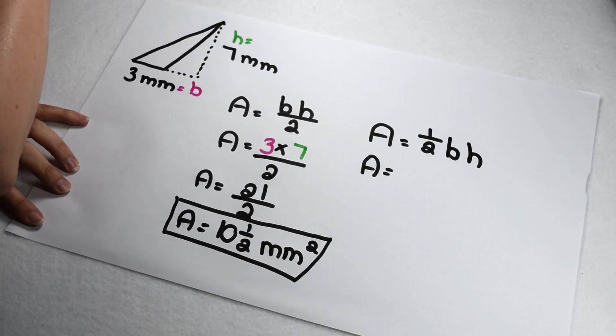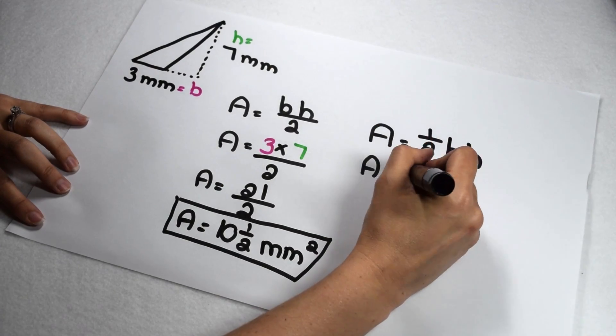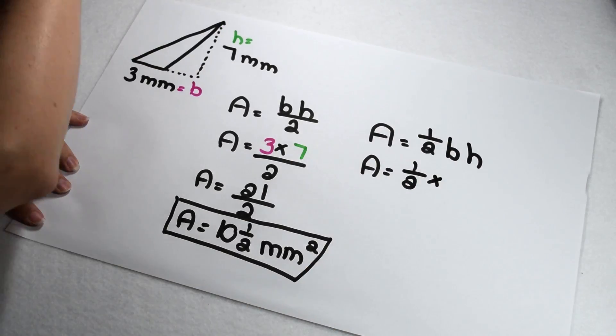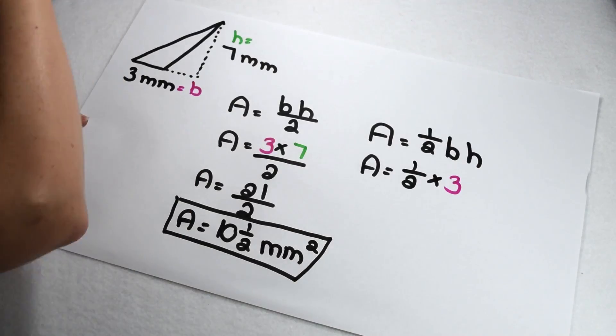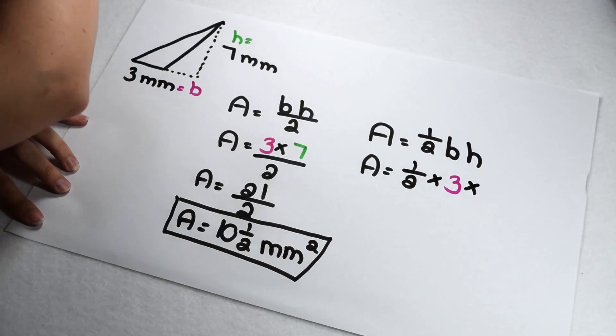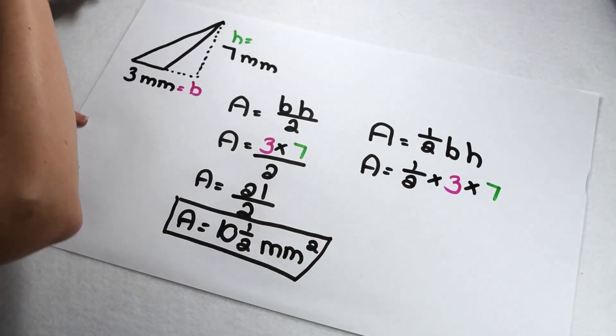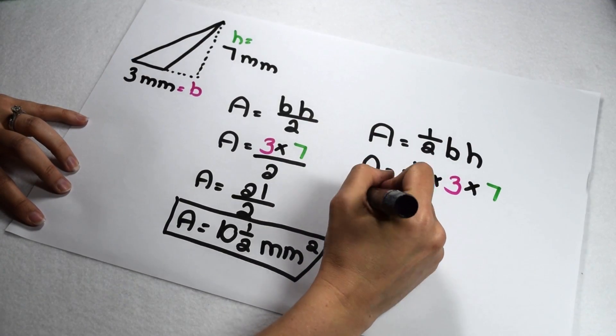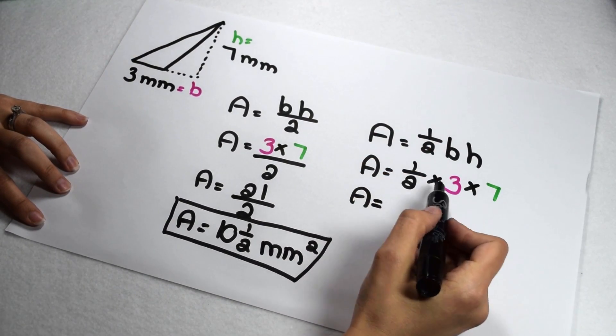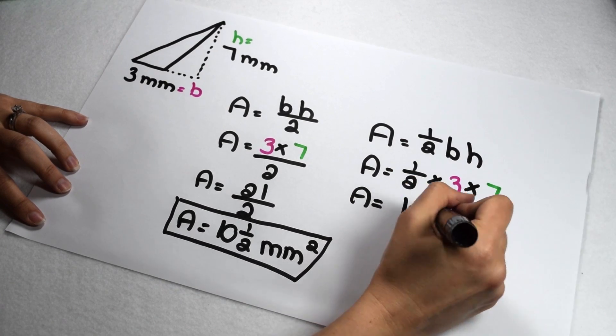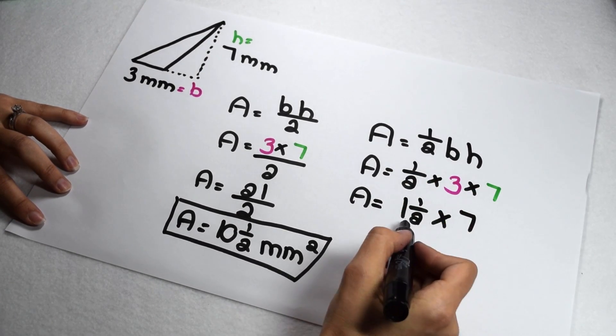I should get the same result using my other equation. I'm going to multiply one half times my base of 3, and I'm going to multiply that times my height of 7. We're going to follow order of operations and work from left to right through our multiplication. One half times 3 gives me 1 and a half, and now I'm going to follow my rules for multiplying mixed numbers times whole numbers.